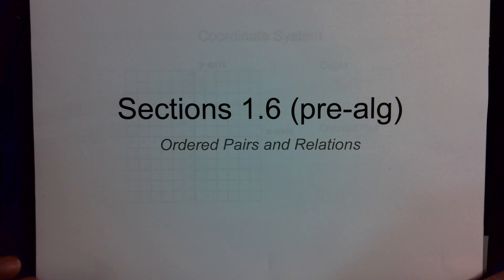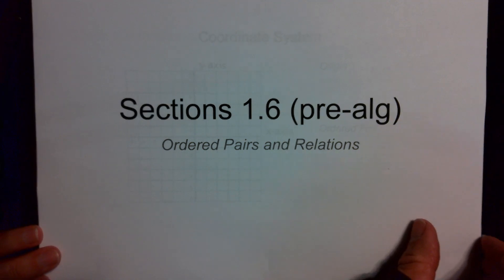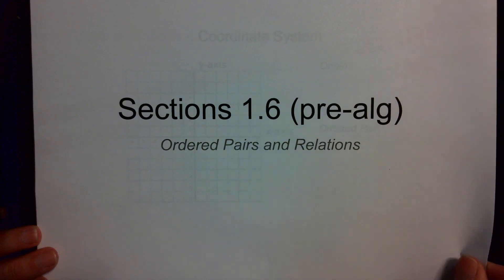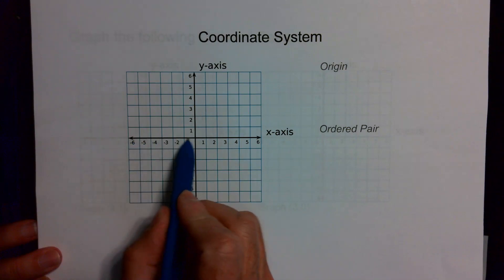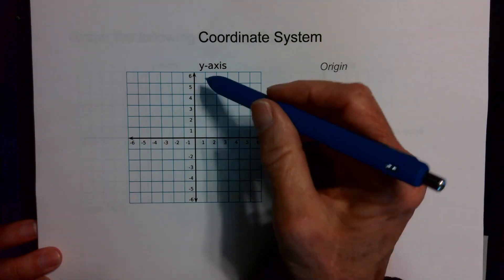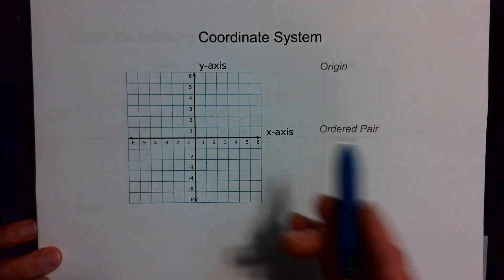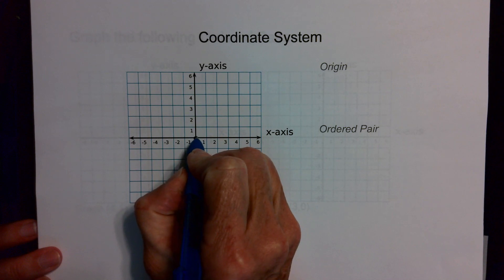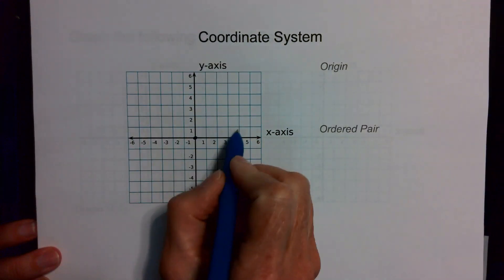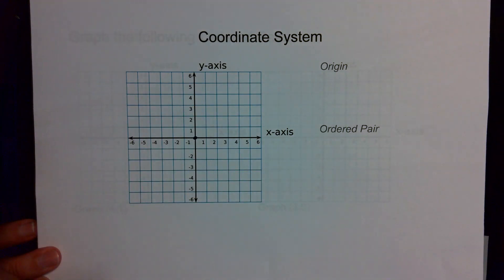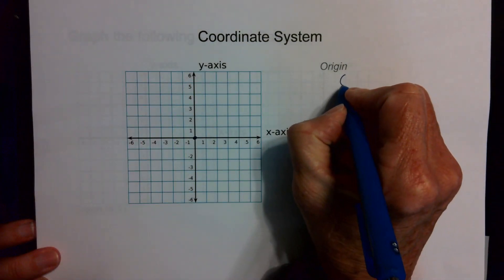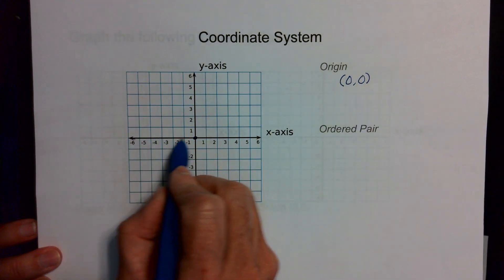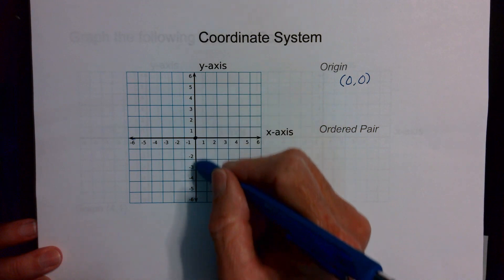We're going to talk about section 1.6 today, which has to do with ordered pairs and relations. We're going to talk about the Cartesian coordinate plane, or coordinate system. It's made up of two number lines: the x-axis and the y-axis. The very center where those two number lines meet is called the origin. Every point on this Cartesian coordinate plane is named by an ordered pair, an x and a y. The origin is named by the point (0, 0) because it's zero on the x-axis and zero on the y-axis.